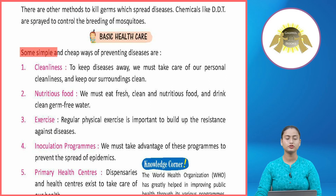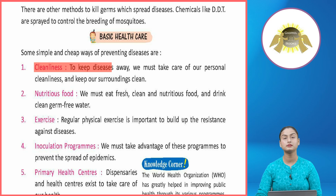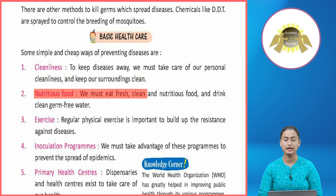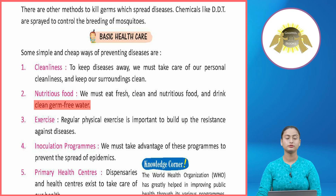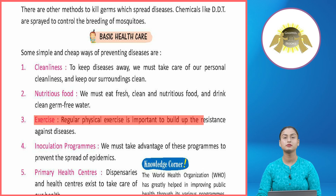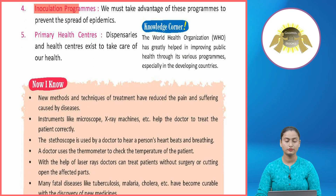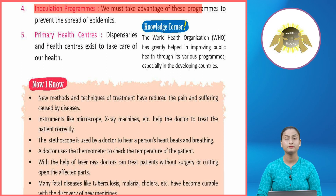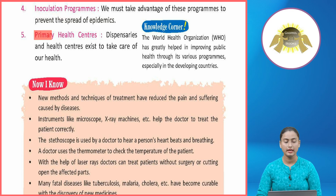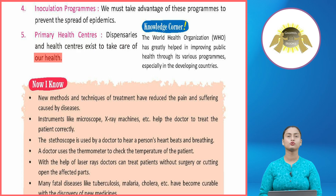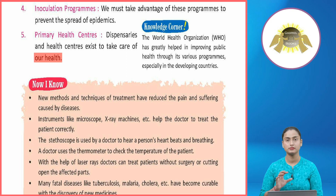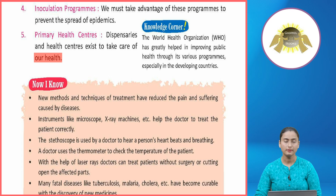Basic Health Care: Some simple and cheap ways of preventing diseases are: (1) Cleanliness — keep our personal cleanliness and surroundings clean. (2) Nutritious food — eat fresh, clean, nutritious food and drink clean germ-free water. (3) Exercise — regular physical exercise builds resistance against diseases. (4) Inoculation programs — take advantage of these programs to prevent the spread of epidemics. (5) Primary health centers — visit dispensaries and health centers regularly for check-ups.